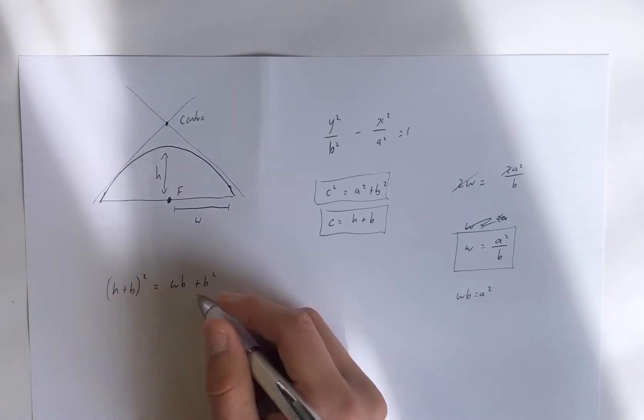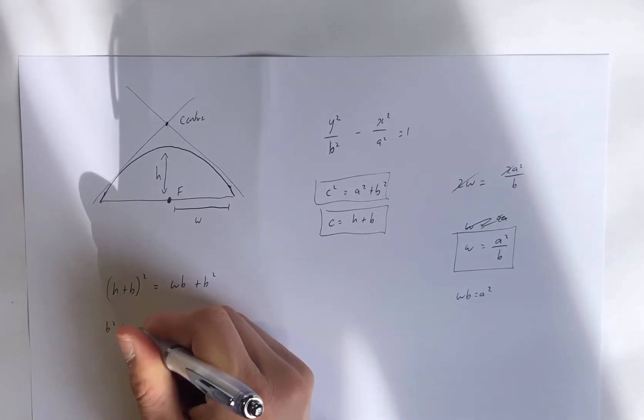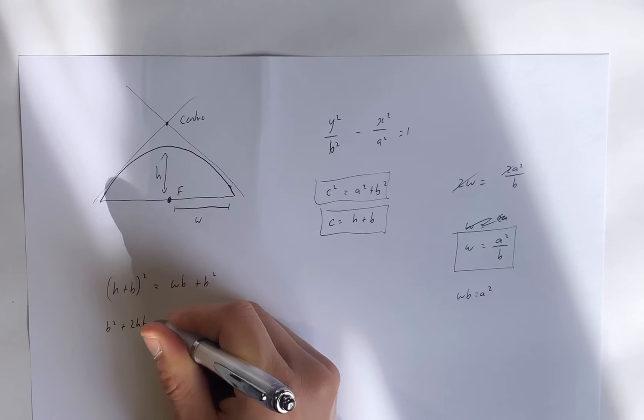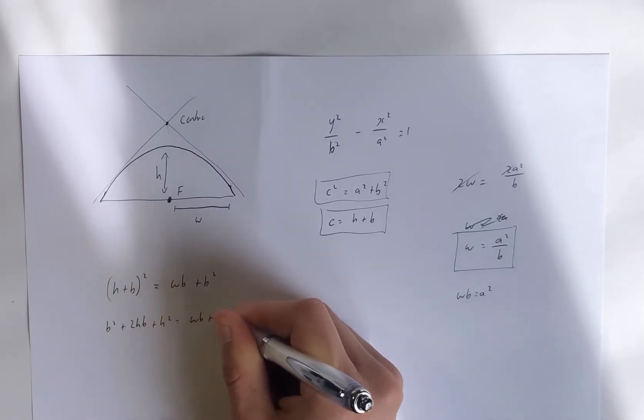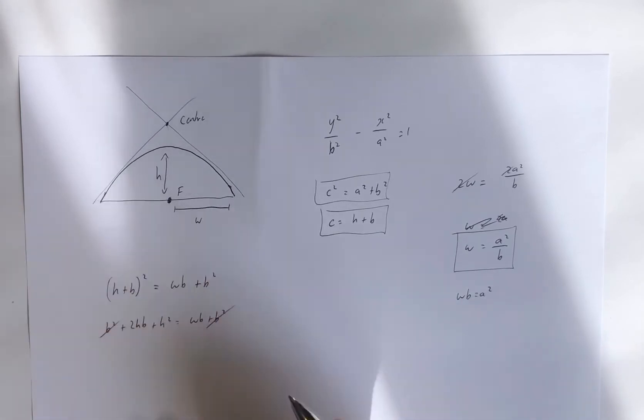So if we expand and simplify this, we'd have b squared plus 2hb plus h squared equals wb plus b squared. We can cancel the b squared. We can cancel b squared.